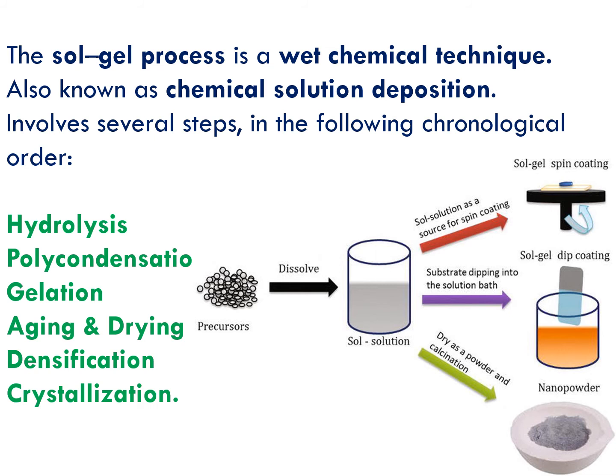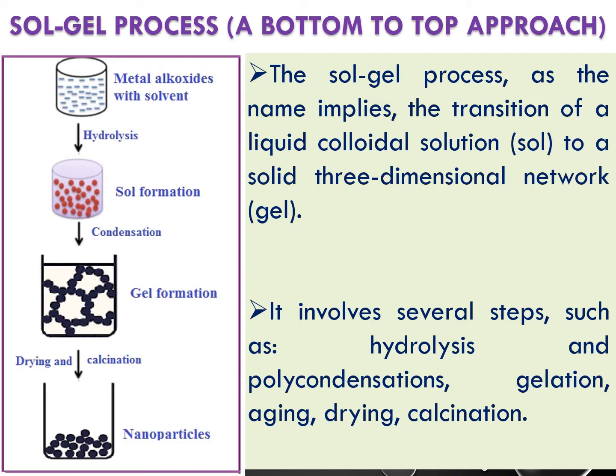To convert this solution to nanoparticles or nanomaterials, we need several steps. The sol-gel process, as the name implies, involves the transition of a liquid colloidal solution to a three-dimensional network gel — converting sol into gel — that's why it's called the sol-gel method. The steps involved are: hydrolysis, polycondensation, gelation, aging, drying, calcination, and crystallization.